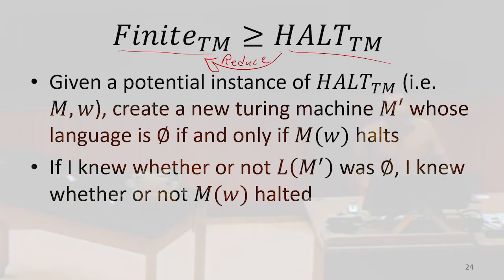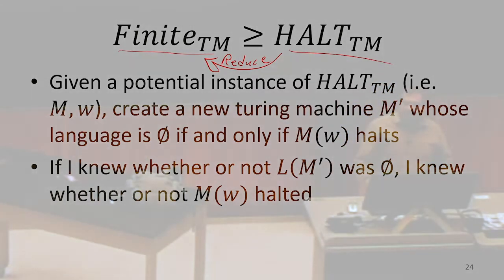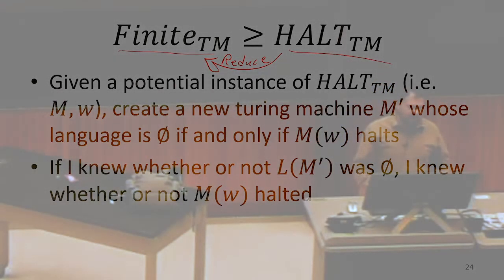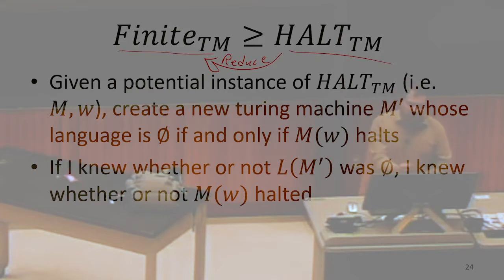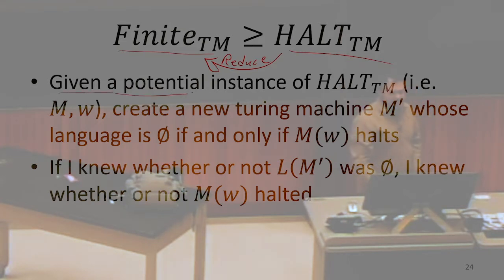The arrows point in opposite directions for reduce versus hardness — I know that's confusing, sorry, there's nothing I can do about that, this was decided about 50 years ago. Anyway, the idea is: let's say we're given some input where we're asking the HALT question on an M-W pair, where M is a machine description and W is an input string.